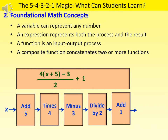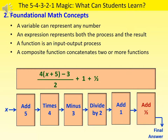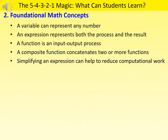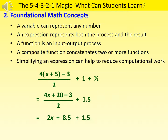Here we can see that the six functions executed in sequence can be represented by a single composite function. The complicated-looking expression for the composite function actually contains all six steps. Students learn many rules for simplifying expressions in algebra, and here they can see the need for simplifying them. The complex-looking expression involving six steps can be simplified into a linear function that involves only two steps.